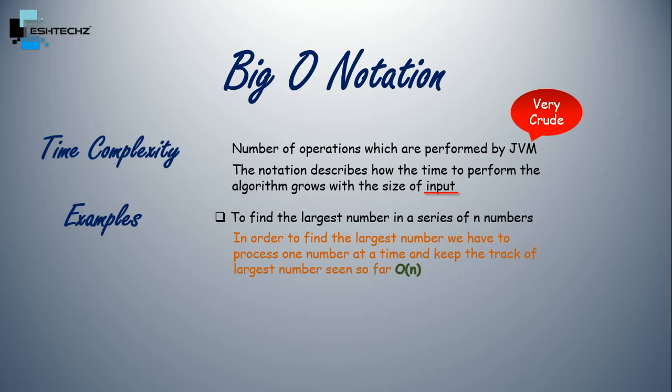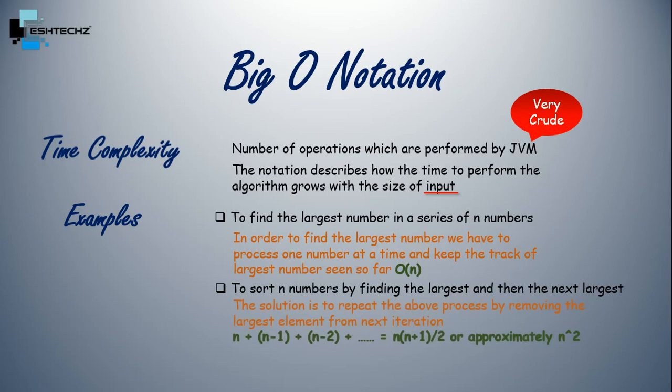And that's why the Big O notation is O(n). Now we will cement our concept with the next example, which is to sort N numbers by finding the largest and then the next largest. Which basically means we want to sort the numbers in descending order.